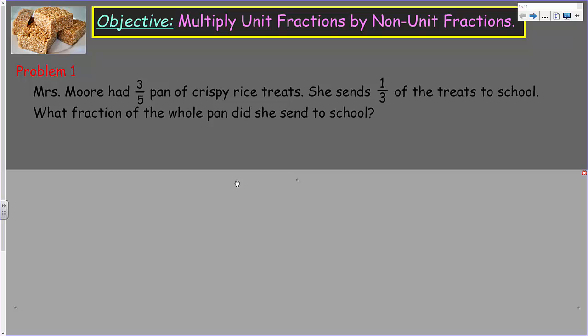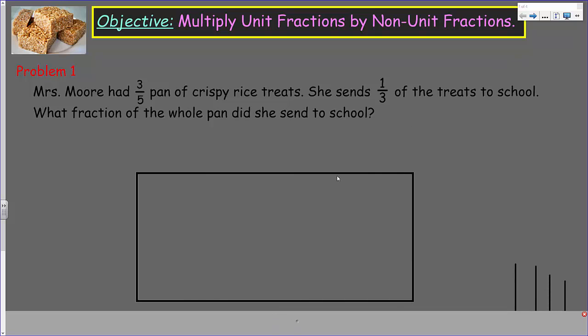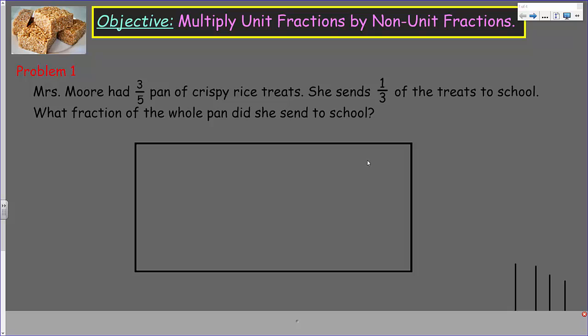Mrs. Moore had three-fifths pan of crispy rice treats. She sends one-third of the treats to school. What fraction of the whole pan did she send to school? Is the question that we have. And I want you to know, someone seemed to think that I needed to learn to say crispy rice treats really fast. I've been practicing. Anyway, let's do an area model like we have in the past.